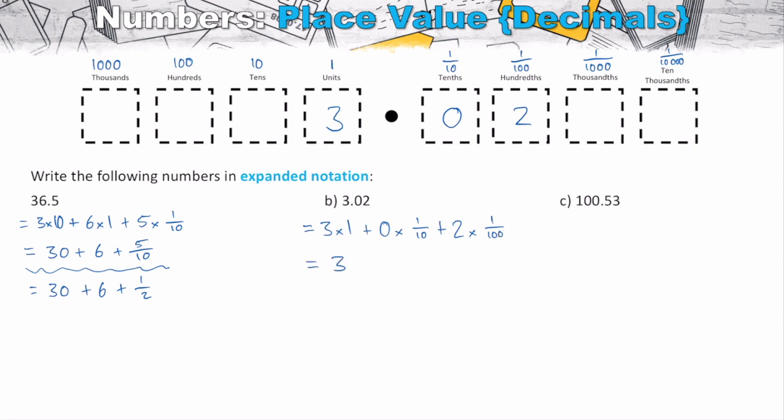Now, three of our units will be three. Zero of something is going to be zero. And then two of our one hundredths is going to be 2/100. And we've now written that in its expanded notation.